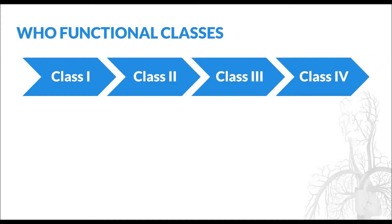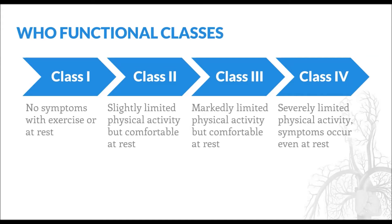Like patients with chronic heart failure, those with PAH can also be classified according to the severity of their symptoms. The WHO functional classification system mirrors the New York Heart Association classification for patients with heart failure. Those with WHO class 1 disease have no symptoms with exercise, whereas those with class 2 and 3 disease have slightly limited and markedly limited physical activity, respectively. Finally, those with class IV disease have severely limited activity and symptoms at rest.